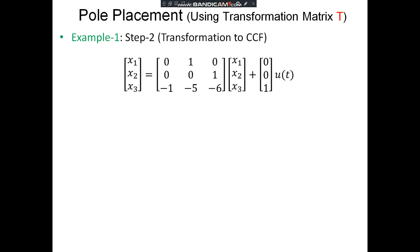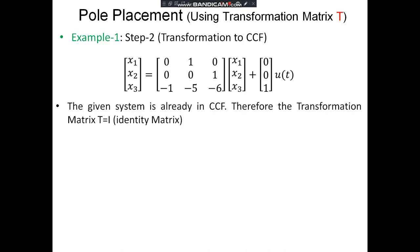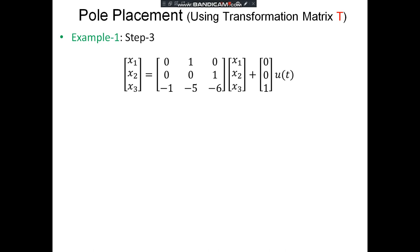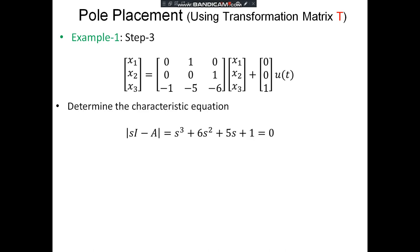The second step is the transformation to controllable canonical form. The given system is already in controllable canonical form, therefore the transformation matrix T equals the identity matrix I. Next, we calculate the characteristic equation: det(SI − A) = S³ + 6S² + 5S + 1 = 0. From this, A₁ = 6, A₂ = 5, and A₃ = 1.